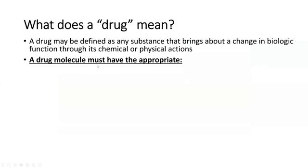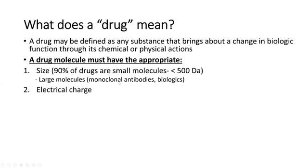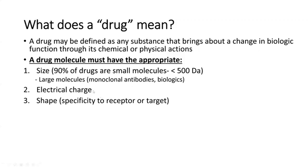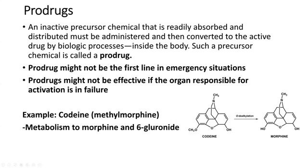So what is a drug? A drug must be a molecule — either a large molecule or a small molecule. About 90% of drugs are small molecules that are less than 500 Daltons. We also have large molecules, which are antibodies or what we call biologics. Drugs can have an electric charge that helps or hurts whether they reach their target. Their shape is specific to the receptor, and their atomic composition and ability to be transported and metabolized all matter.